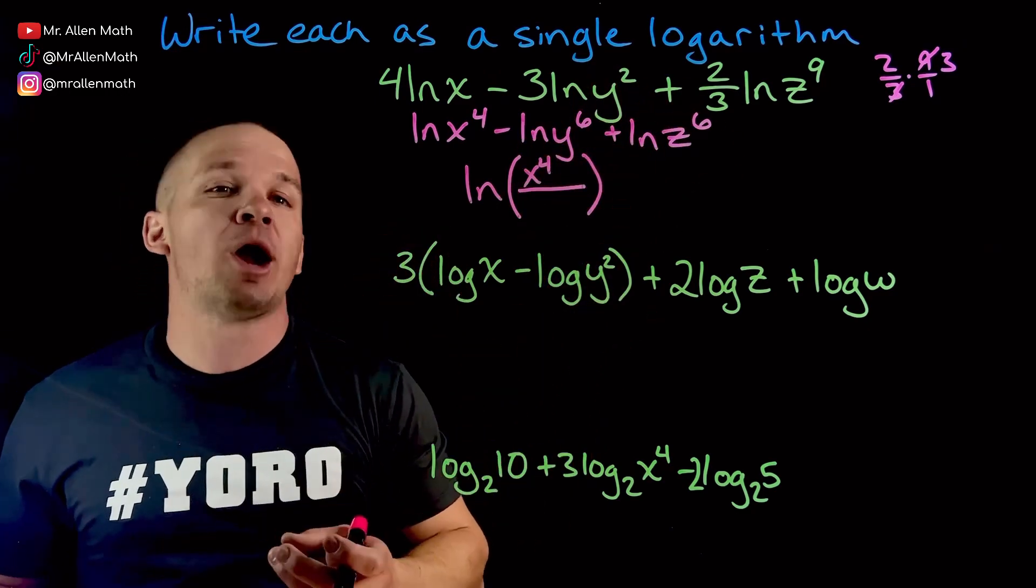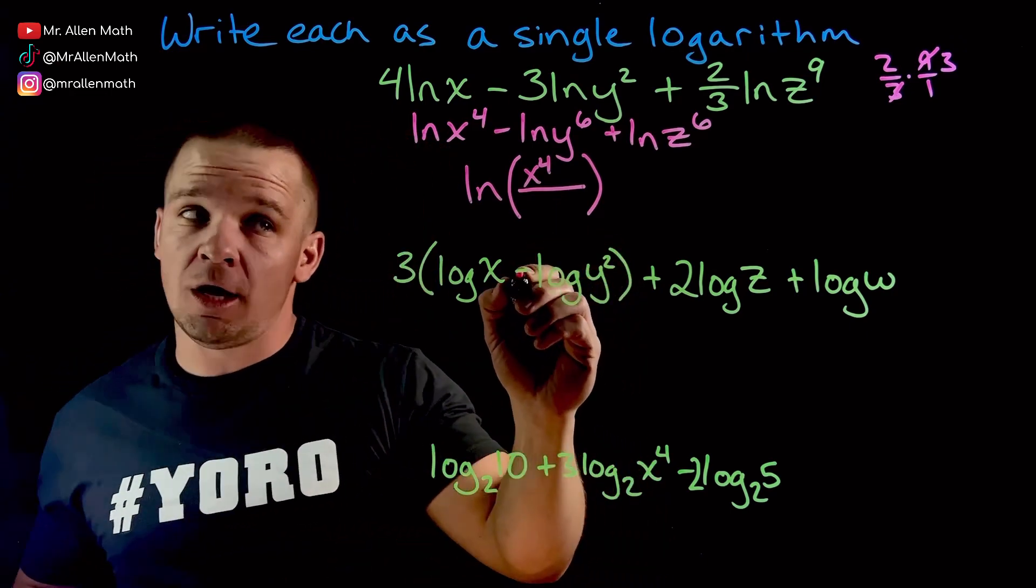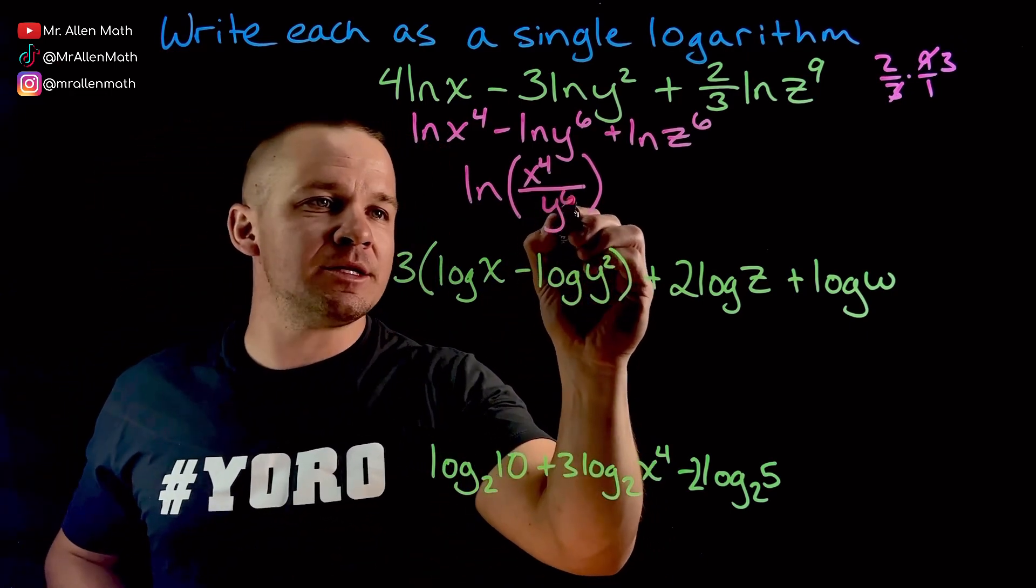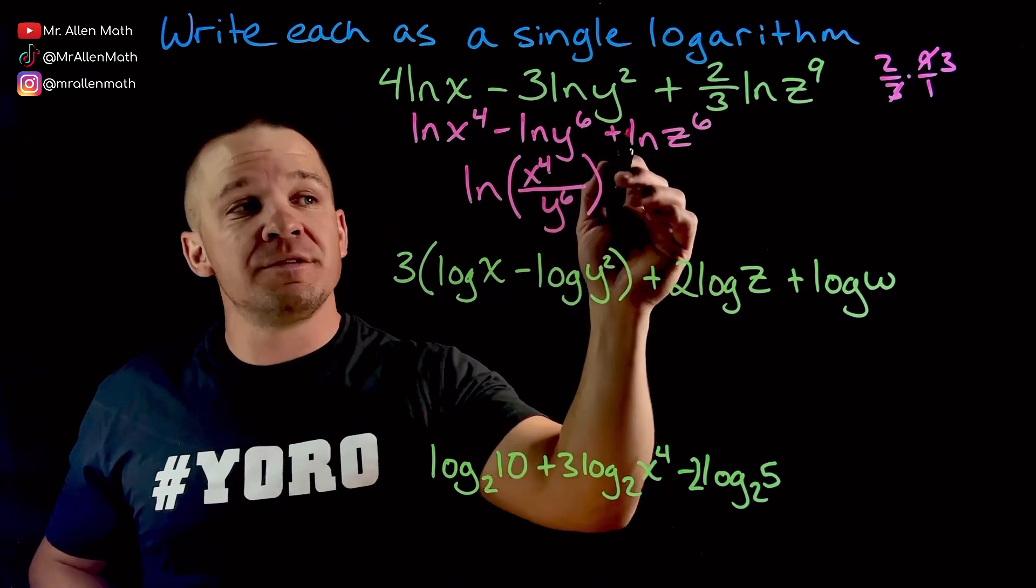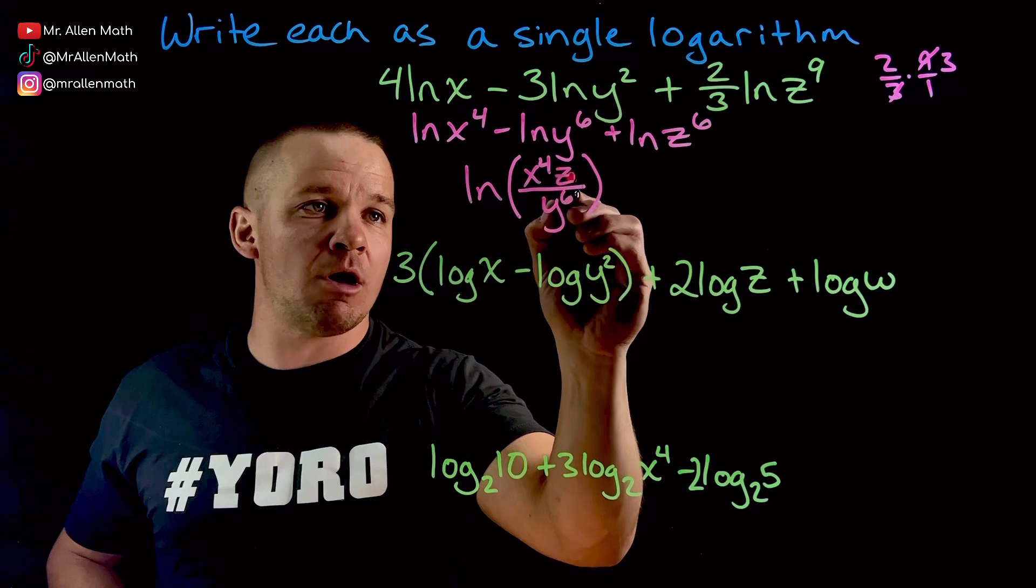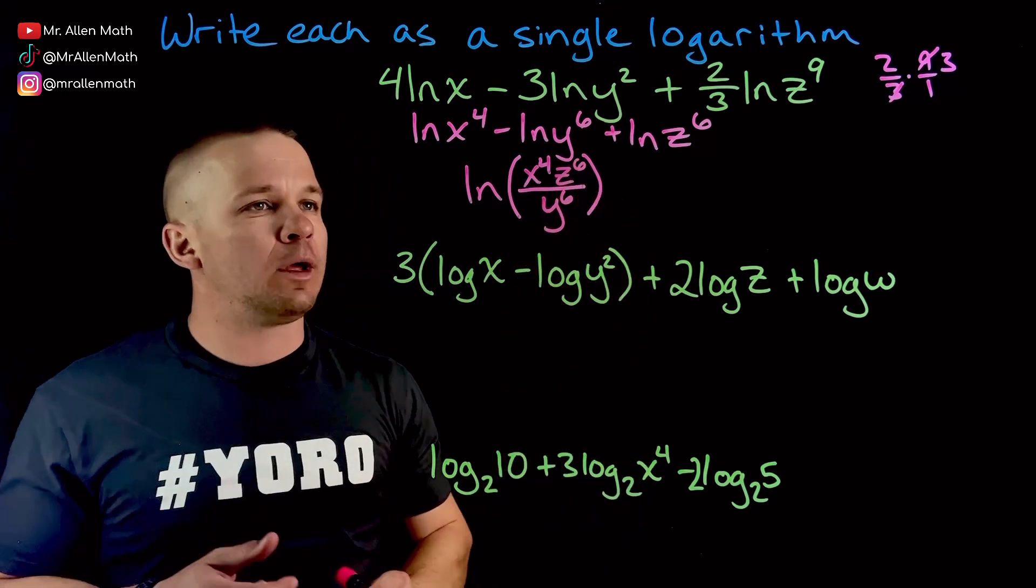Exponent properties, bro. Exponent properties are huge in logs. So I got y to the sixth, and then that's positive right there. Positive natural log of z to the sixth, so that z to the sixth has to go up in the numerator. There we go. Beautiful.